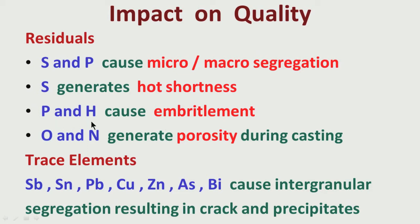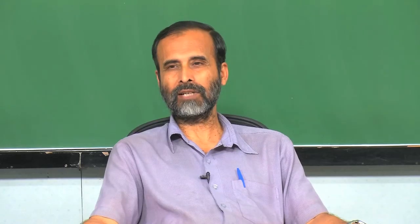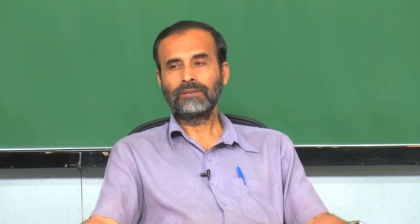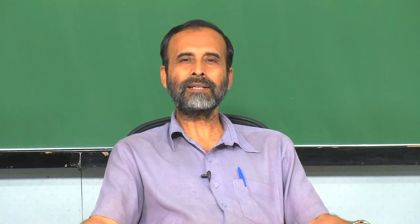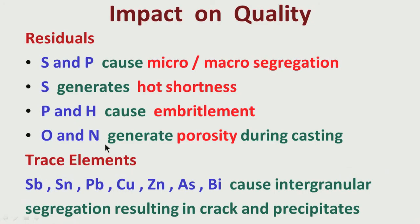Phosphorus and sulphur may also cause embrittlement at normal or even low temperature — they make the steel component brittle, lowering toughness and potentially causing crack formation at low temperature during processing. Oxygen and nitrogen, if present in large amounts, can generate pores during casting — porosity is a problem in casting if you have excessive oxygen, nitrogen, or hydrogen in steel.